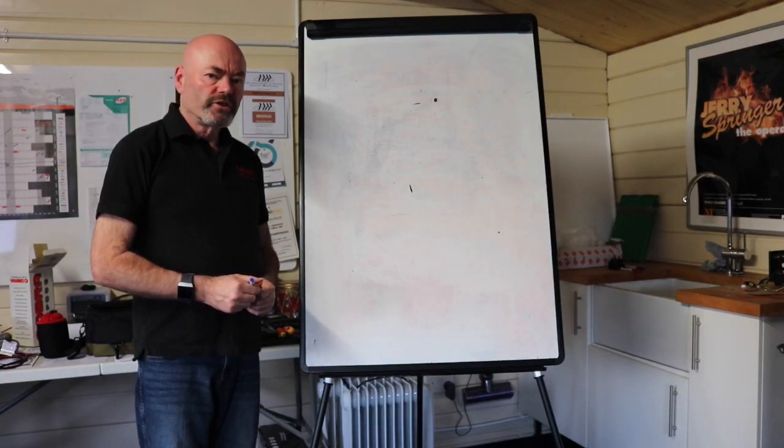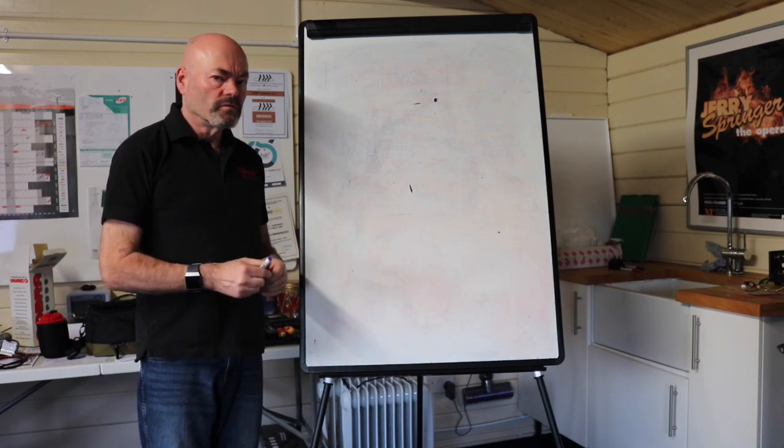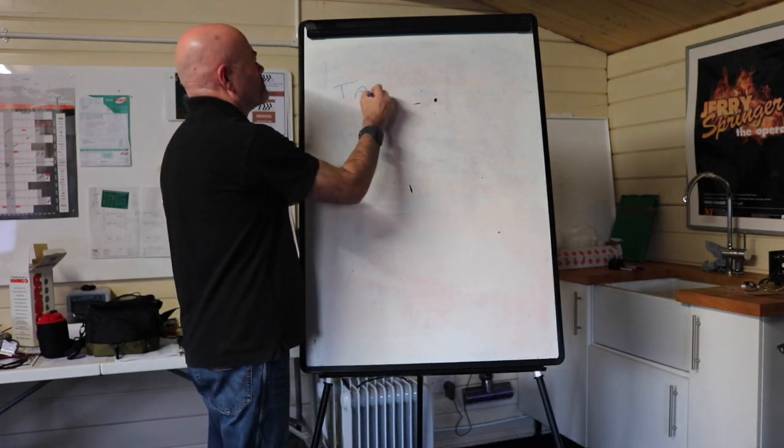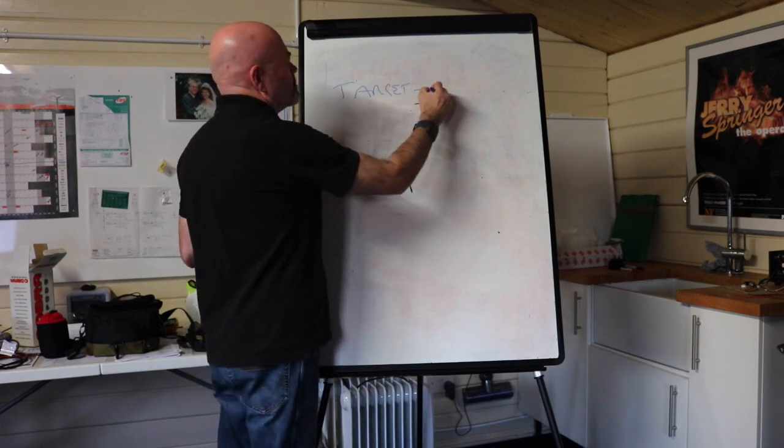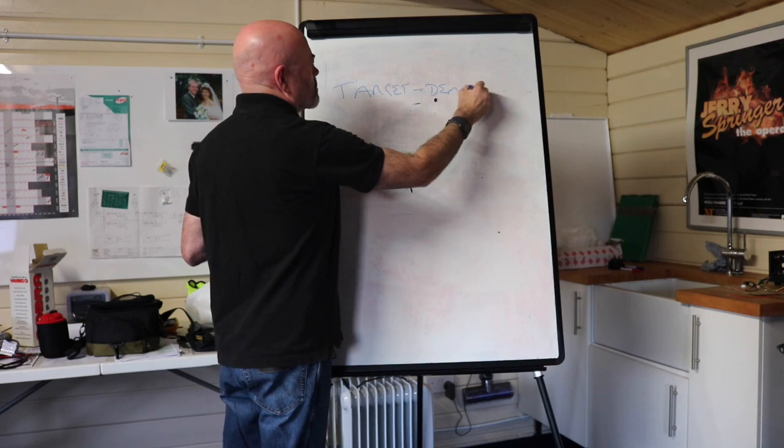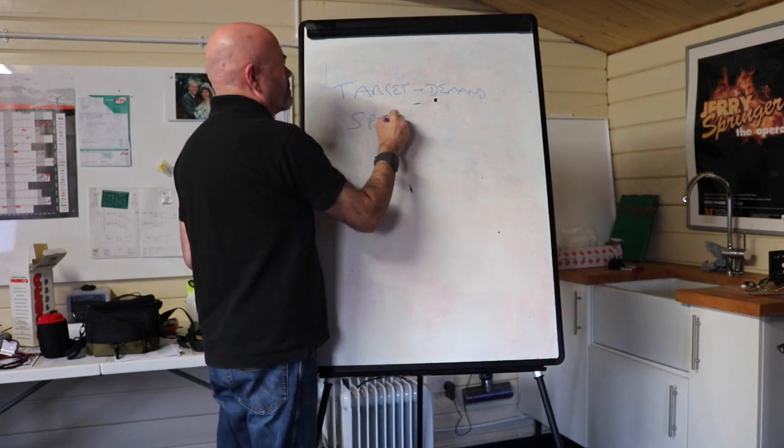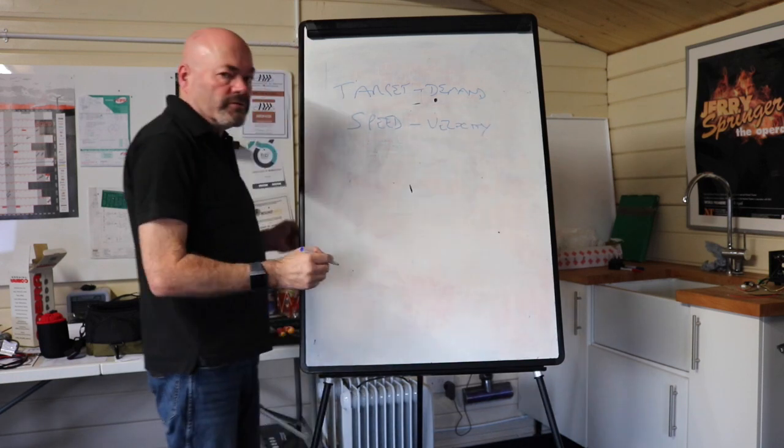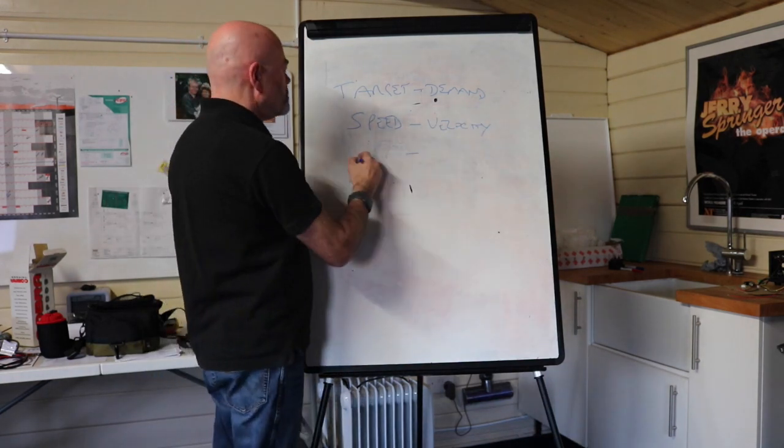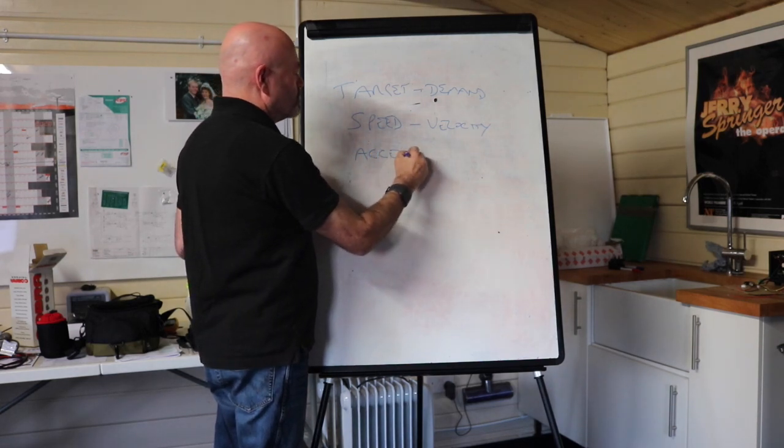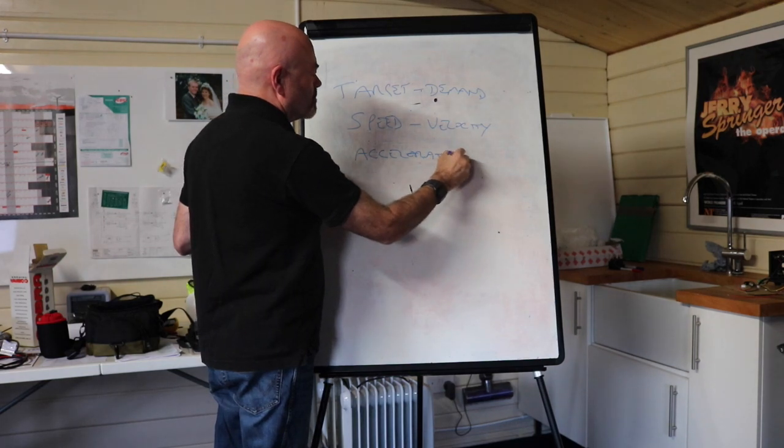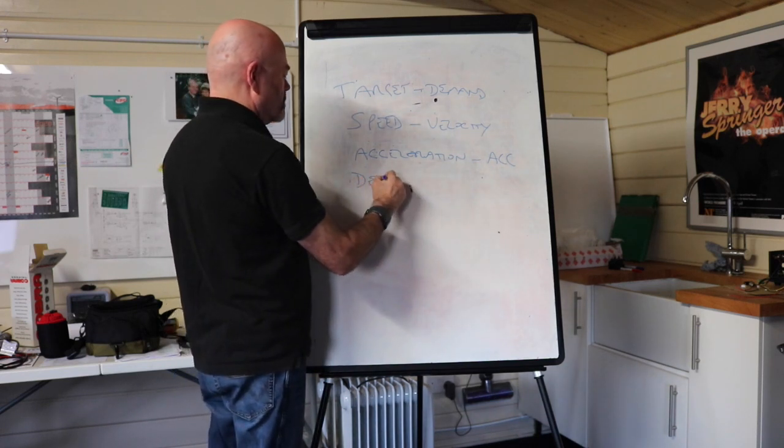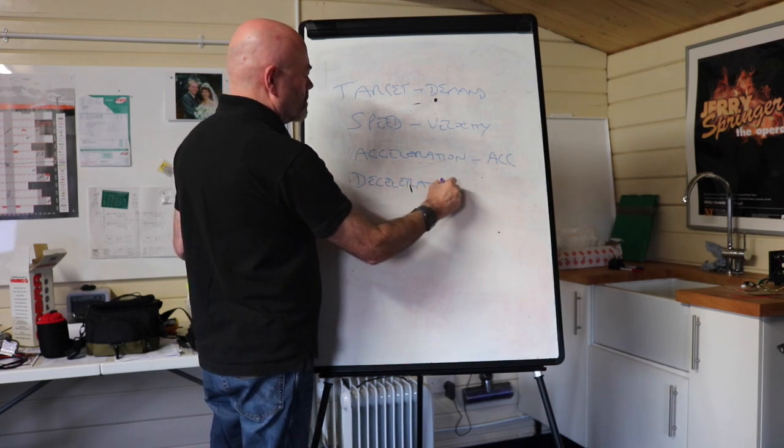Now the control system needs the information from the HMI as to where to go and at what speed, acceleration, deceleration. So the information it needs is the target, sometimes called the demand, speed, sometimes called velocity, there is a difference between them but I'm not going to go into that now. Acceleration, we just shorten it to AC and deceleration.